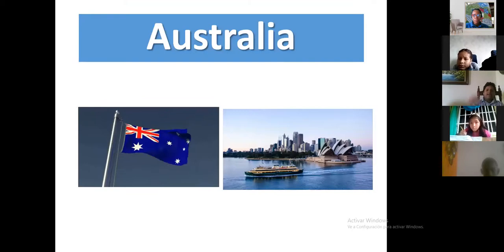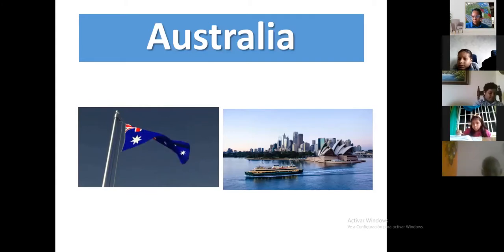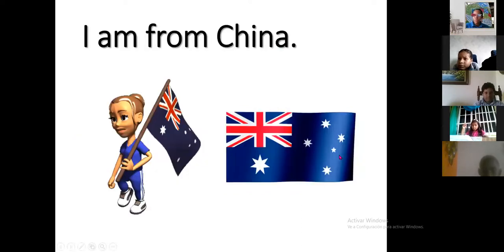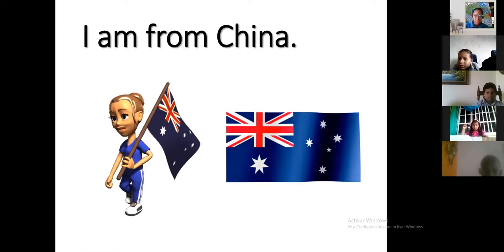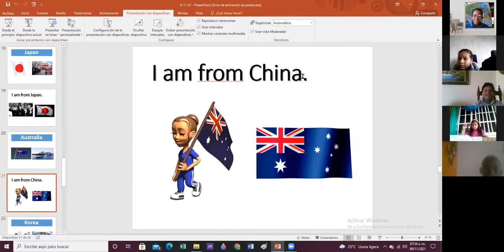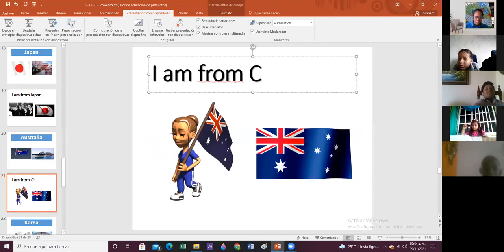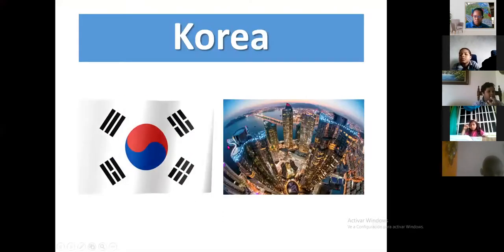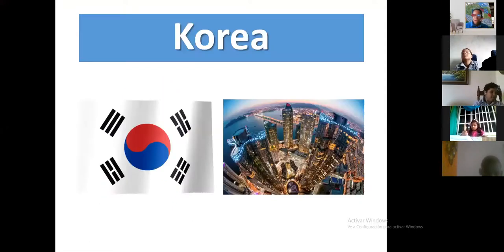Australia's flag has three colors: blue, white, and red, and it has a structure similar to the Biomuseo here in Panama. I am from Australia — sorry, I had China written instead of Australia; I was thinking of China at that moment!